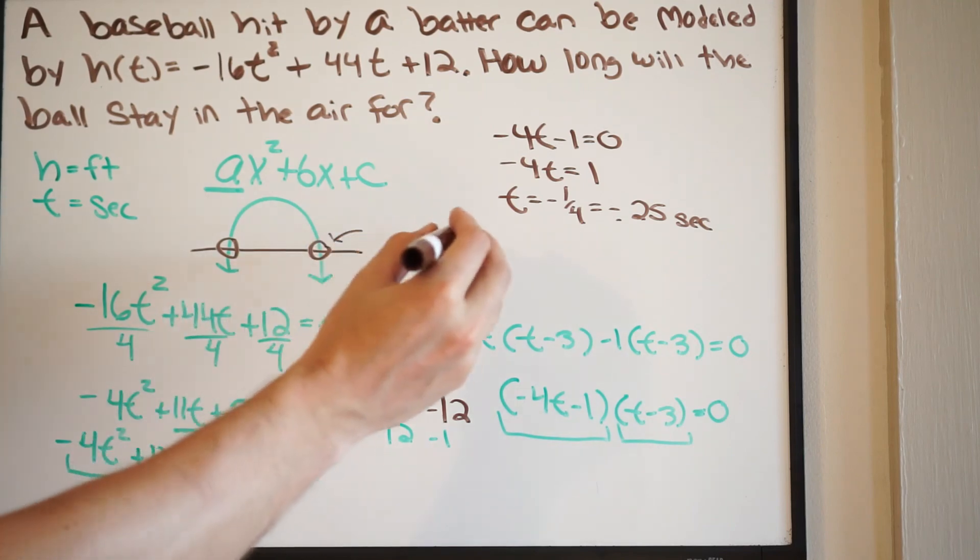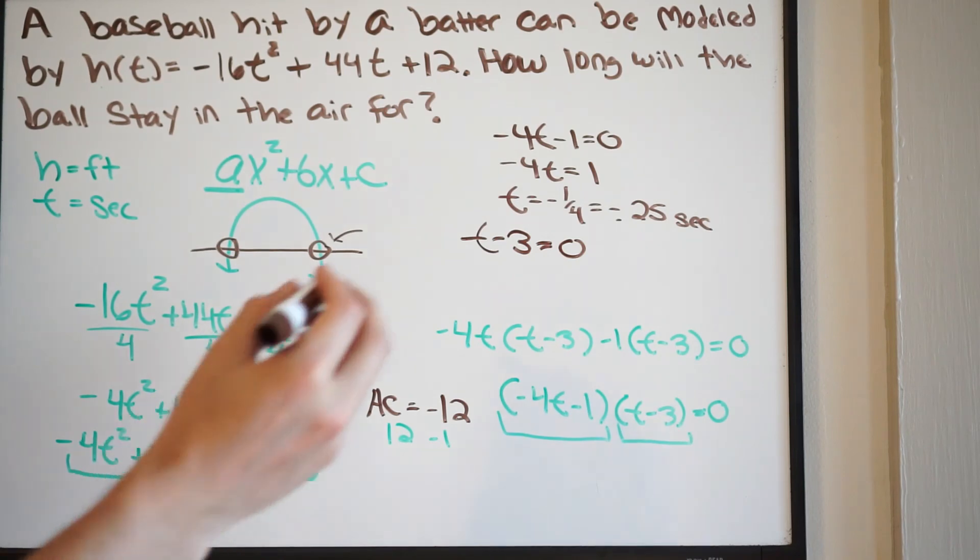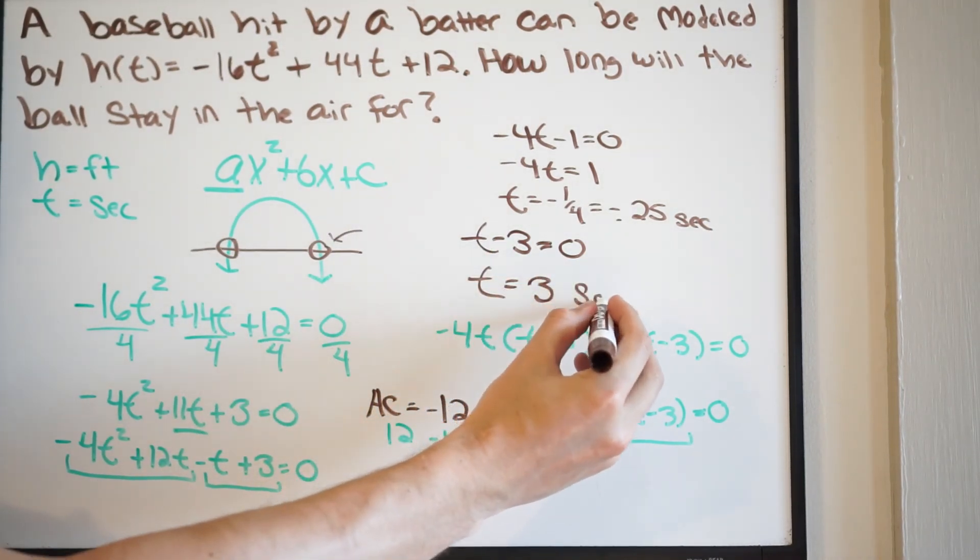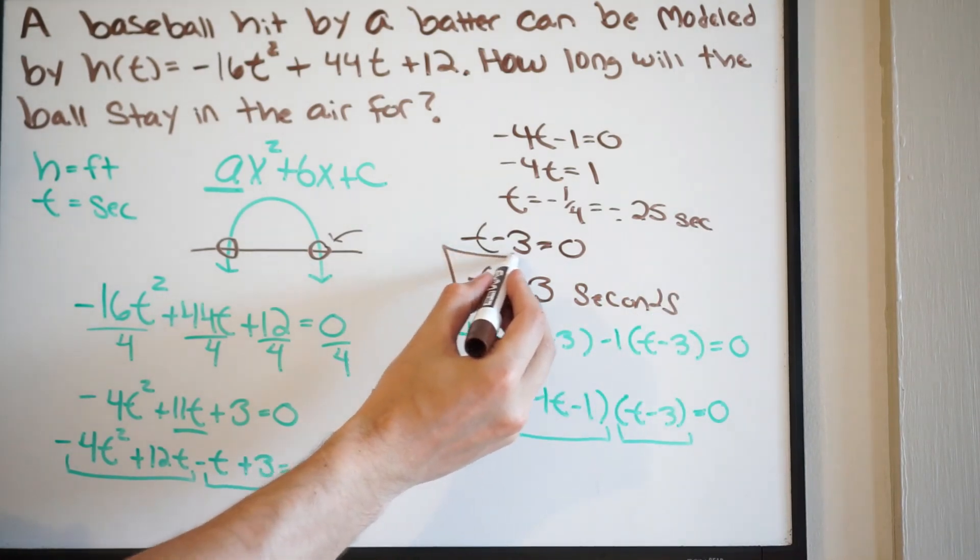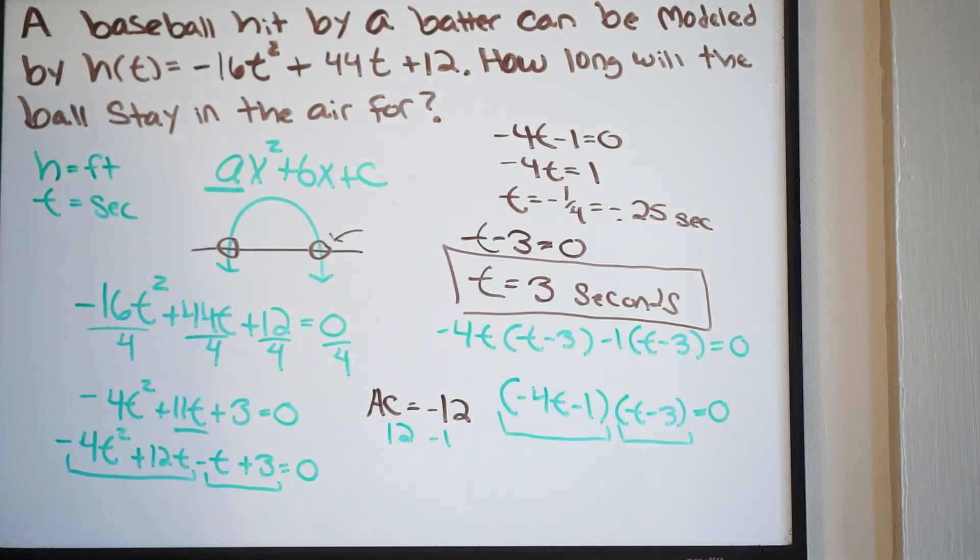We have t minus 3. And we're going to set this equal to 0. When we solve this, we get t is equal to 3. This will be seconds. Okay, this makes sense. This is going to be our answer. So the ball is going to stay in the air for 3 seconds. And that is it.